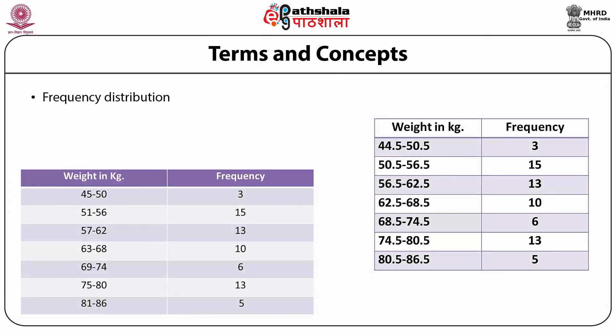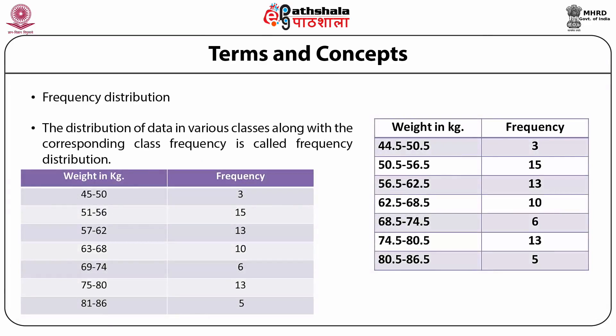The distribution of data in various classes along with the corresponding class frequency is called the frequency distribution. Classes may be ungrouped or grouped. If the data set is small, the classes are ungrouped, as shown in Table 1 and Table 2. If the data set is large, the classes are grouped. Examples of frequency distribution with grouped classes are presented in Tables 3.1 and 3.2.